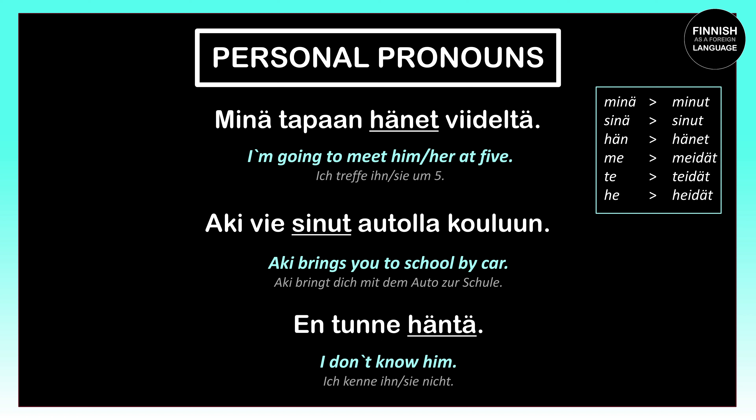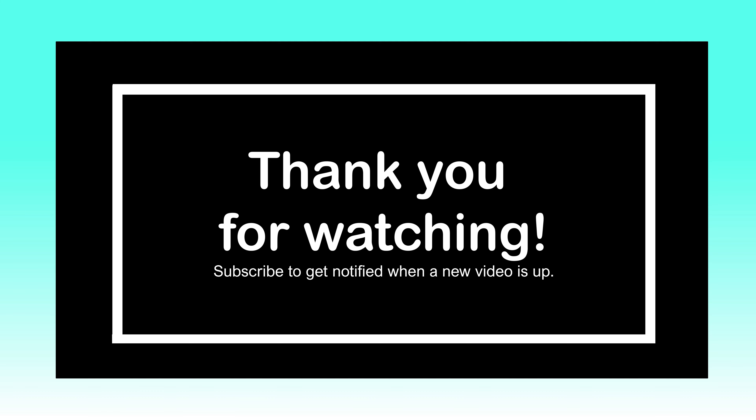Personal pronouns can also appear in the partitive case. As mentioned at the beginning of this video, when we have a negative sentence, we need the partitive case. For example, 'En tunne häntä' means 'I don't know him.' 'Häntä' is the partitive case of 'hän,' and since this is a negative sentence, we need the partitive case for our personal pronoun. And that's it for today — I hope you enjoyed this video. If you liked it and want to learn more Finnish, please subscribe to this channel. Thank you so much for watching, and see you next time.